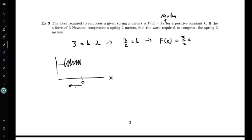What we want to do is compress the spring 3 meters. So we are going to let the positive x direction be pointing to the left here, where we are compressing the spring, so that x equals 3 lives somewhere over here. Now what we want to do is push this spring in 3 meters, and so that means we are taking this integral from 0 to 3 of the force function, which is 3 halves x dx.